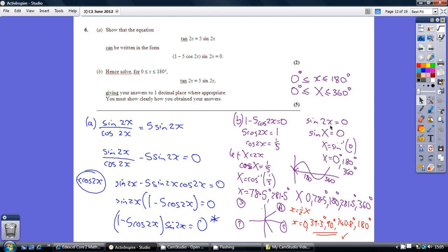Now from sine 2x, best just to do this straight from the sine curve. We get the solutions of 0, 180 and 360. 360 counts because there's less than or equal to 360.